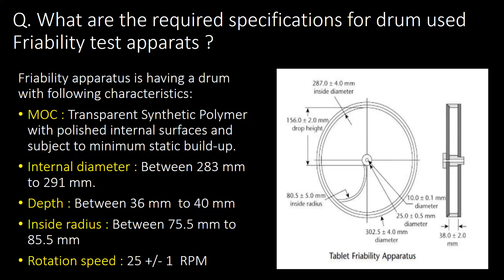What are the required specifications for the drum used in the friability test apparatus? Important specifications for the drum include: MOC, internal diameter, depth, inside radius, and rotation speed. You can refer to the schematic of the tablet friability apparatus for more details.